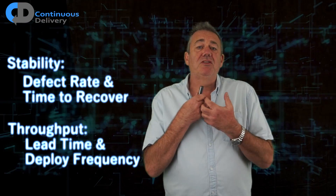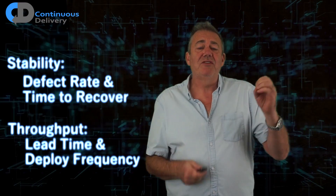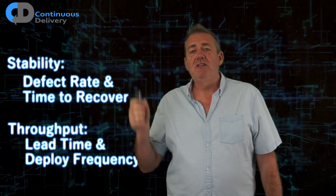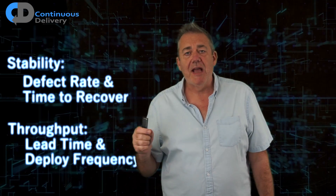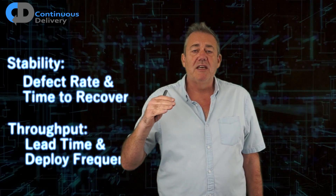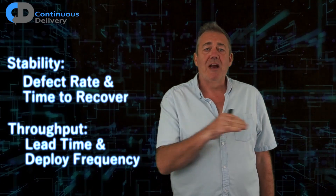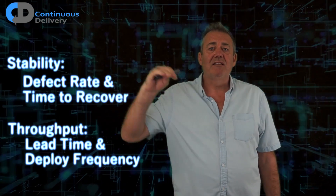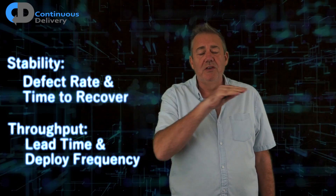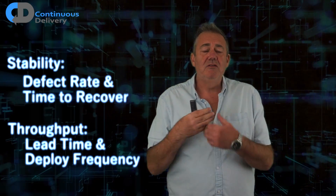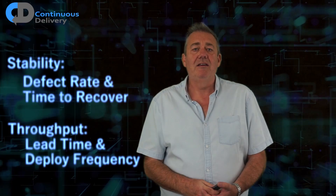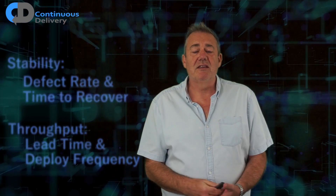These metrics don't have one right answer — it's not that this percentage is good and this percentage is bad. What's useful within your organisation is to track the trends: are you getting better in terms of stability and throughput, or are you getting worse? These are the key indicators that will identify whether that's the case.